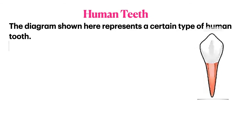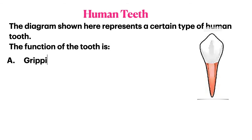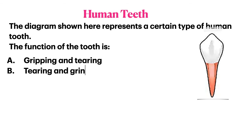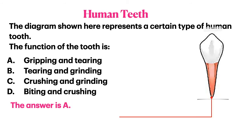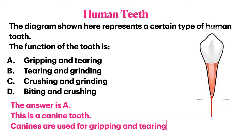The diagram shown here represents a certain type of human tooth. What is the function of this type of tooth? Gripping and tearing; tearing and grinding; crushing and grinding; or biting and crushing. The answer is A — this is a canine tooth. Canines are used for gripping and tearing food.